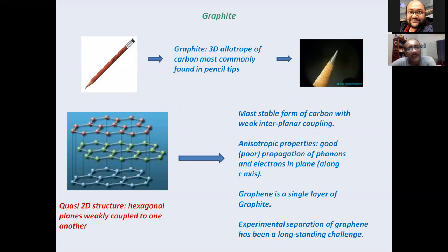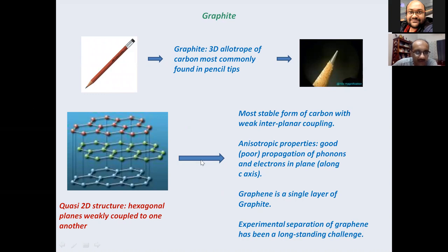Graphite is a 3D allotrope of carbon, most commonly found in pencil tips. It has a quasi-two-dimensional structure with hexagonal planes loosely coupled to each other. Because the coupling within the plane is very strong and the interplanar coupling is very weak, the properties of graphite are quite anisotropic. One of the first persons to point this out was K.S. Krishnan.